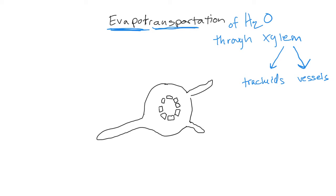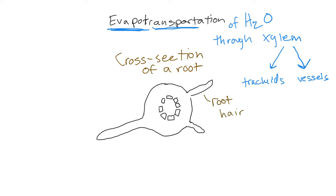Our journey starts at the root. This is a cross-section of the root, and these little appendages coming off of it are root hairs. The xylem is on the very inside here, and the water is out here in the soil. So we need to get the water from outside into the xylem.